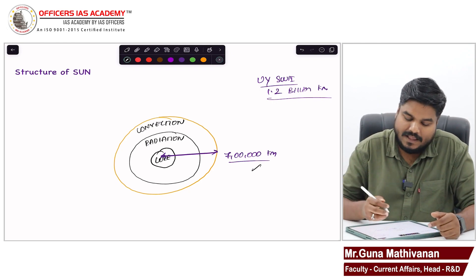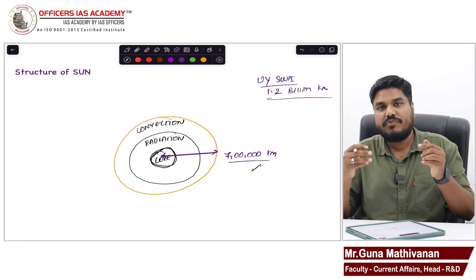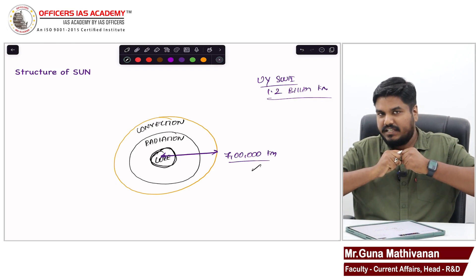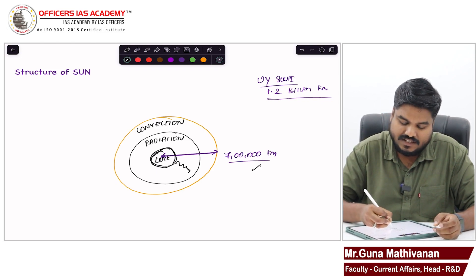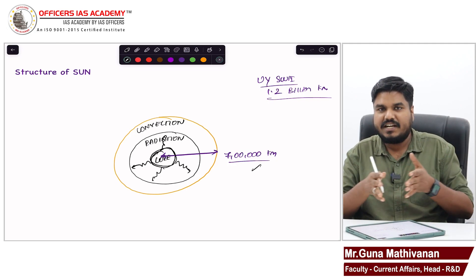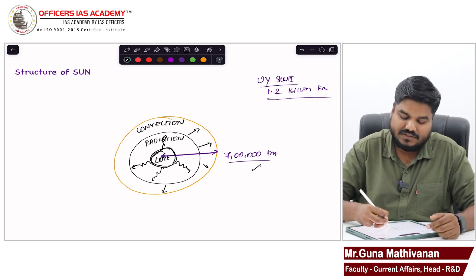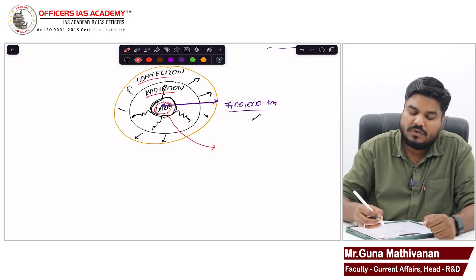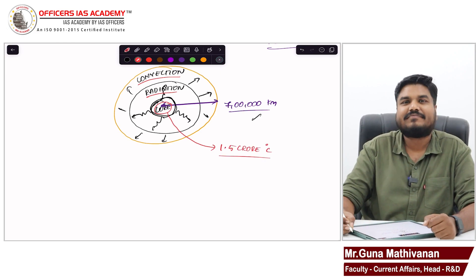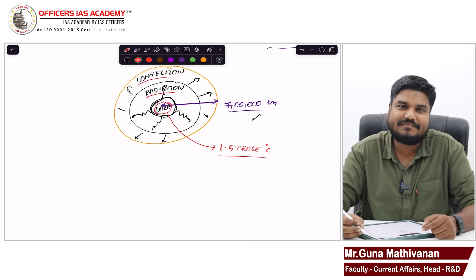The core is the innermost part of the sun, where the actual nuclear fusion reactions continuously take place. The energy released is in the form of radiations seen in the radiation zone. In the second layer, huge amounts of energy are released as radiation, and the same energy in the form of heat is released in the convection zone. The temperature of the core is close to 1.5 crore degree Celsius.